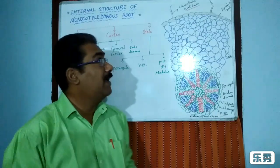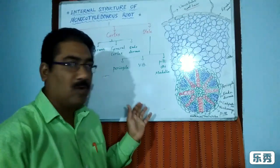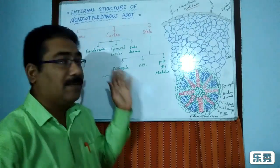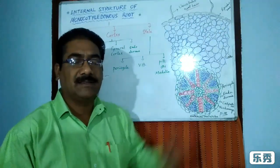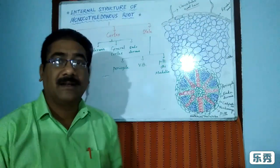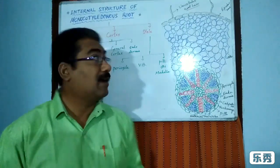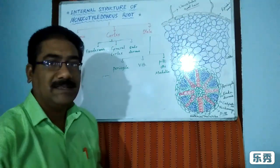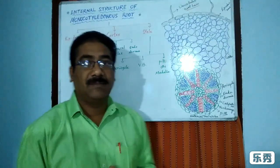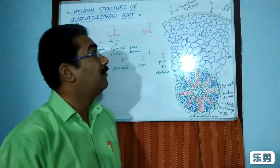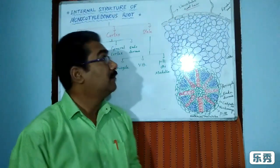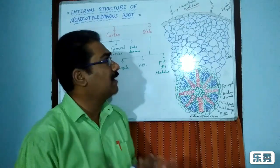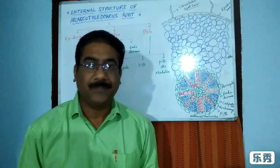In the monocot root, all the characters of the epidermis are similar to the dicot root. The epidermis is uniseriate — single layered — with compactly arranged parenchymatous cells without any intercellular spaces. It is a protective layer. Some epidermal cells have unicellular extensions called root hairs. Cuticle and stomata are absent in the epidermis.